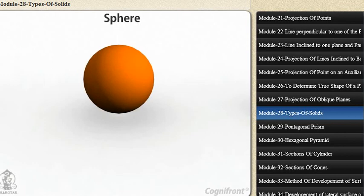Sphere. A sphere is a solid generated by the revolution of a semicircle about its diameter as the axis. The midpoint of the diameter is the center of the sphere. All points on the surface of the sphere are equidistant from its center.